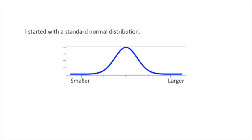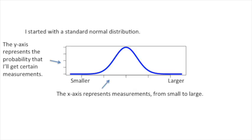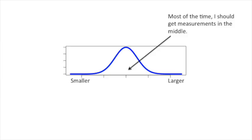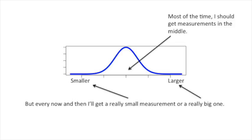I started with a standard normal distribution. The x-axis represents measurements from small to large. The y-axis represents the probability that I'll get certain measurements. Most of the time, I should get measurements in the middle. But every now and then, I'll get a really small measurement or a really big one.